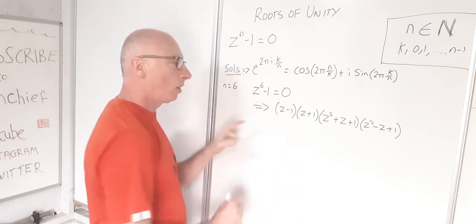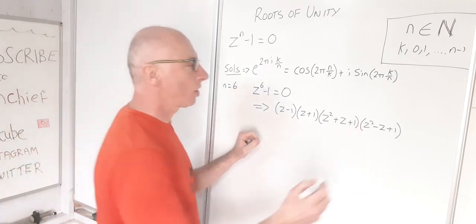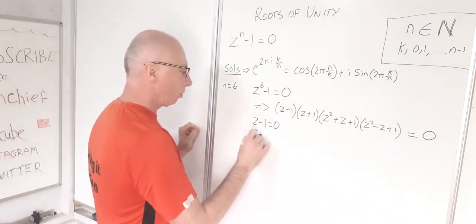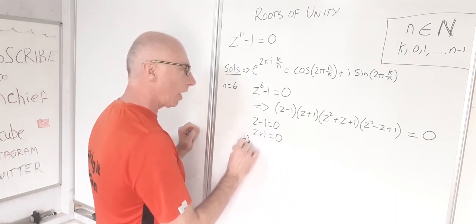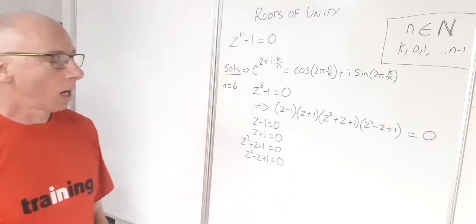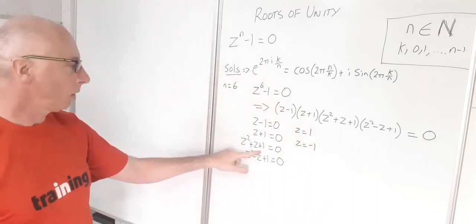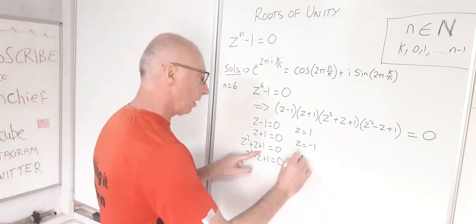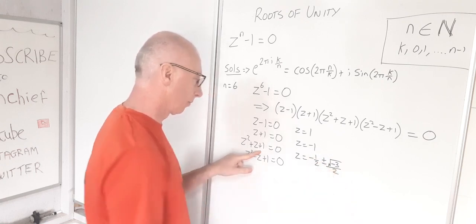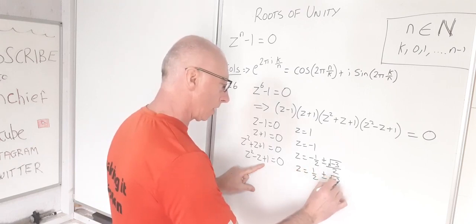Setting each factor to zero: z − 1 = 0 gives z = 1; z + 1 = 0 gives z = −1. For z² + z + 1 = 0, the quadratic formula gives z = −1/2 ± √(−3)/2. For z² − z + 1 = 0, we get z = 1/2 ± √(−3)/2. These last two give complex solutions that are conjugates of each other, reflected in the real axis.